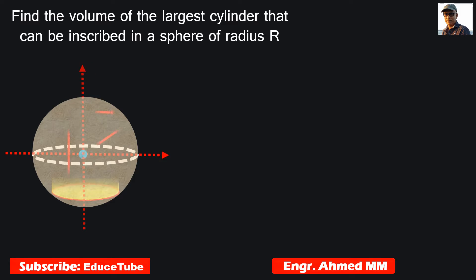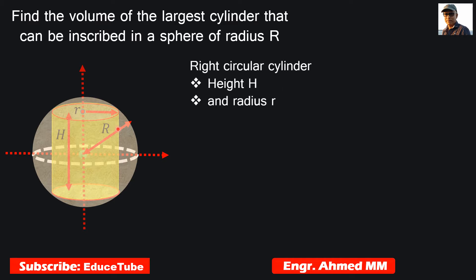Hi everybody, today I'm going to show you how to find the volume of the largest cylinder that can be inscribed in a sphere of radius R. Here the cylinder height is H and radius is small r, and the radius of the sphere is capital R.